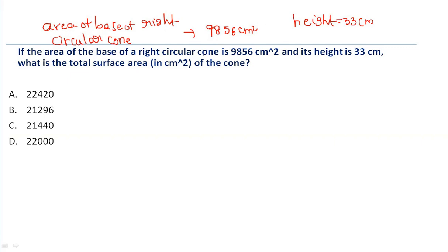With the given expression, the area of the base of a right circular cone — the formula is nothing but πr². So we equate πr² equal to 9856.